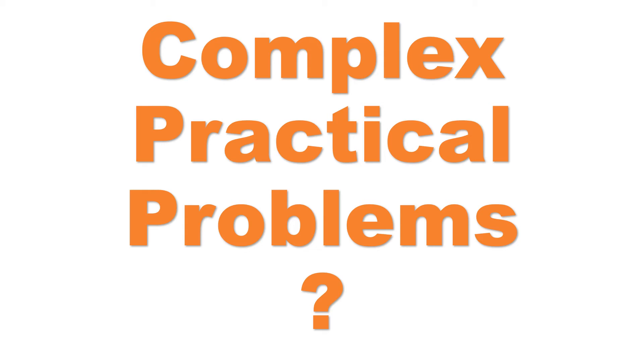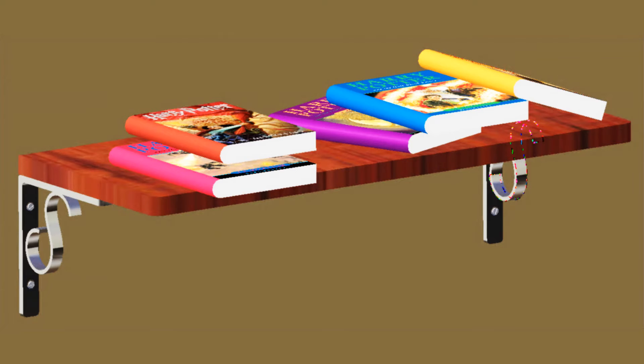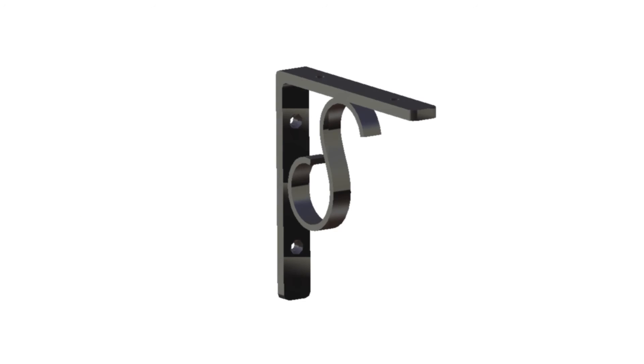But what about some complex practical problems? It's not that easy to apply these equations directly onto entire models. Let's take a look at a simple bookshelf. We want to find out how much is its load carrying capacity or simply deflection because of the books. We'll consider this tail bracket for the calculations. The fastening holes and spline bracing adds a little complexity in the model.